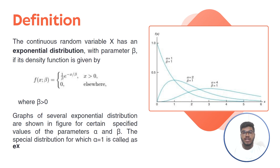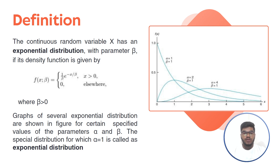First, the definition of the exponential distribution. A continuous random variable x has an exponential distribution with parameter beta if its density function is given by: f(x, beta) = (1/beta) * e^(−x/beta), where x is greater than 0, or 0 for all other values. The beta value will always be greater than 0. The graph of the exponential distribution is shown in the diagram, where graphs of several exponential distributions are displayed.